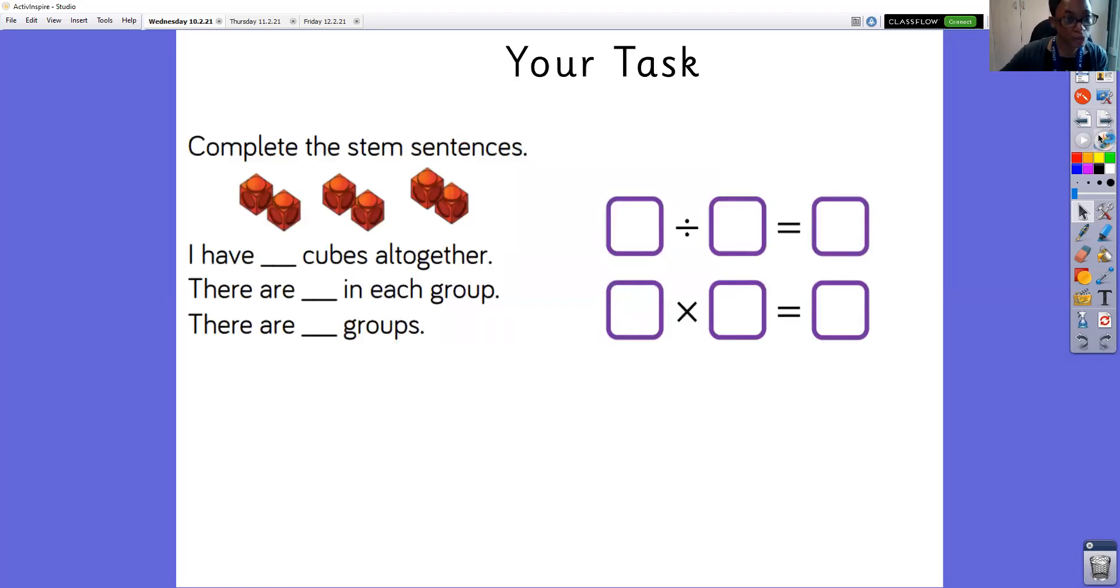Right, continuing into your books now, your tasks, thinking about what we have seen with our dividing by two. Also we can see we have our multiplication symbol. Complete the stem sentences: I have cubes altogether. There are in each group, there are groups.